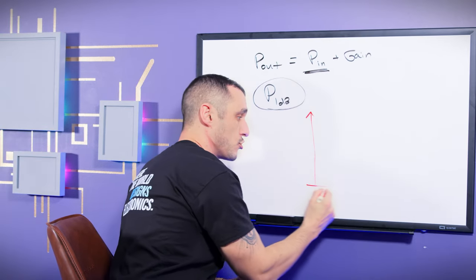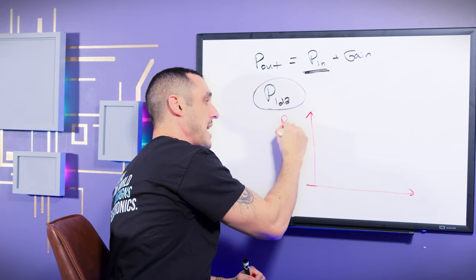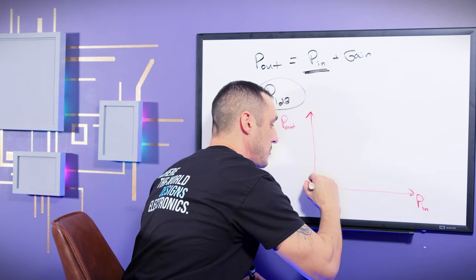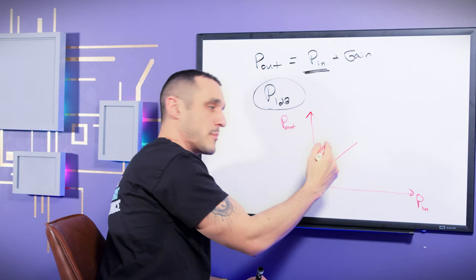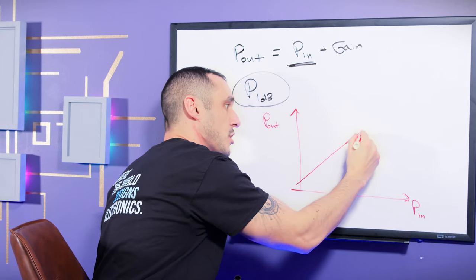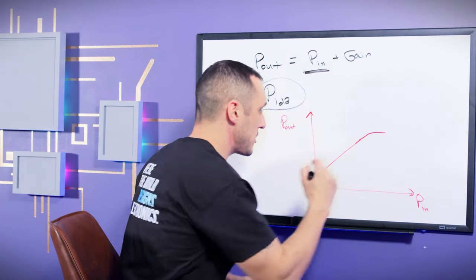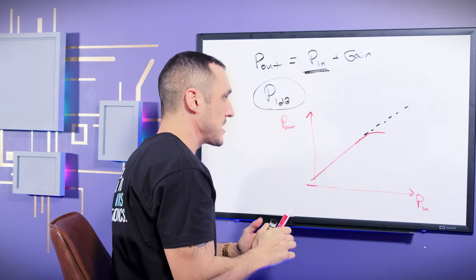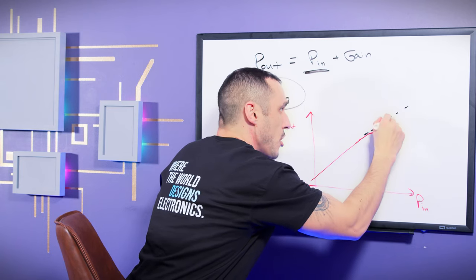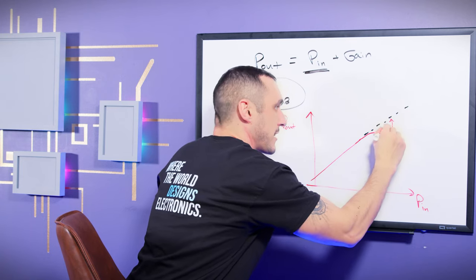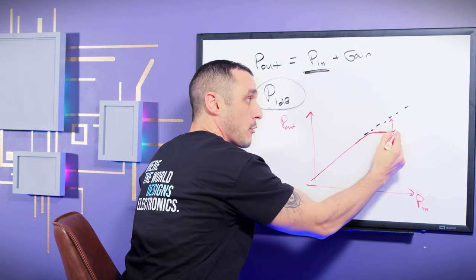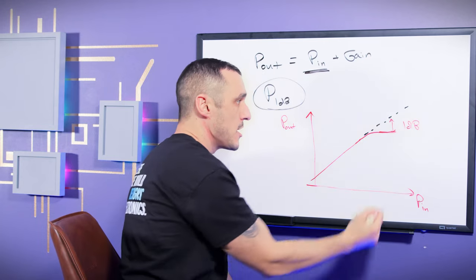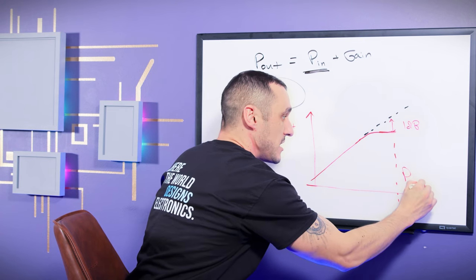So if we were to draw this out on a graph of P out versus P in, what we're going to find is that the P out and P in relationship is going to scale linearly for quite a bit. And then eventually this curve will start to roll over a little bit. And if I were to then continue drawing out this straight line and tracing it like this, what I will do is I find one particular P in value where this distance between the black dotted line and the actual output power curve is lower or different by one decibel.